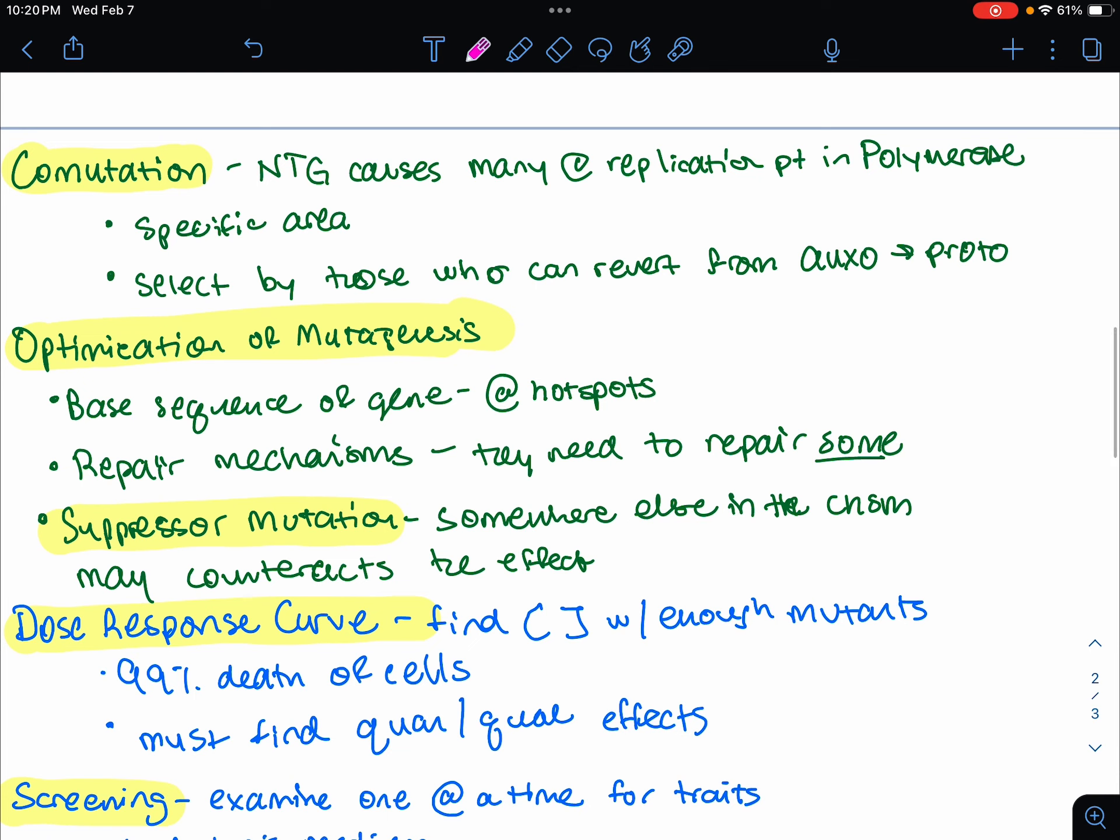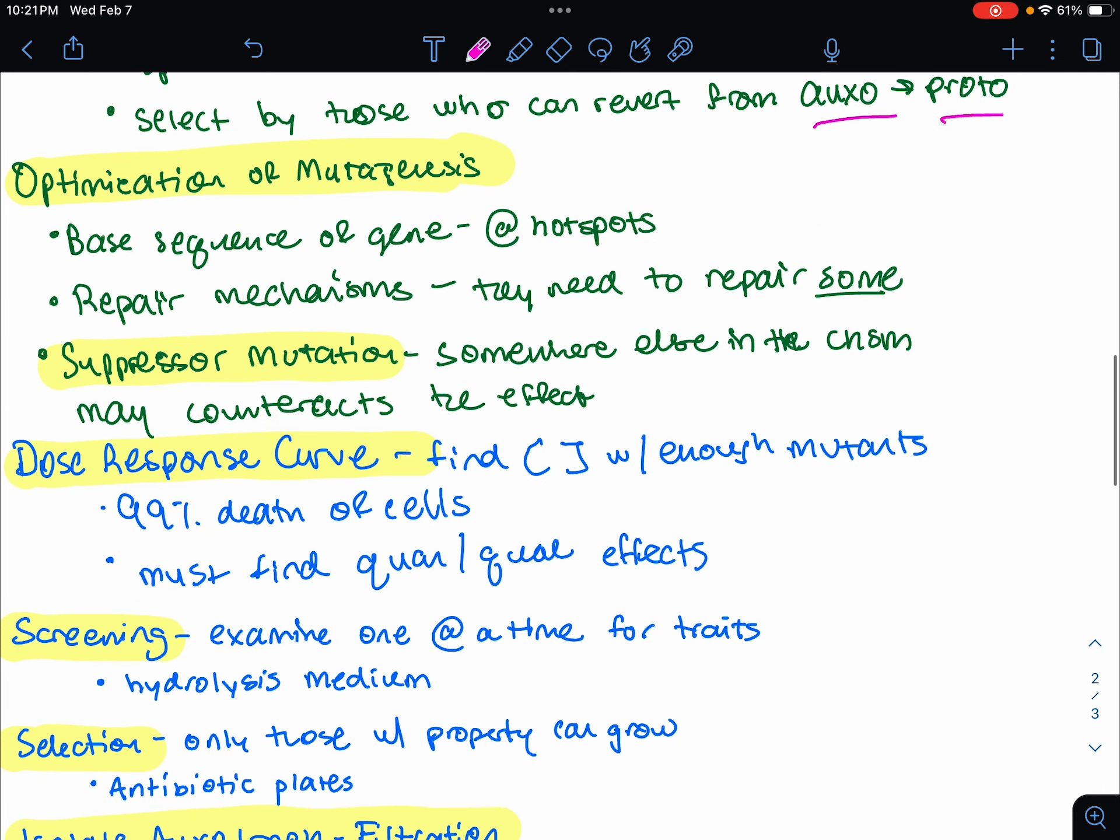We also have something called commutation. We're going to be using this molecule here, NTG. It causes multiple mutations at the replication point through affecting polymerase. When a mutation is induced at a specific area or locus, a large number of further mutations can be found in the closely linked gene. It's kind of like a ripple effect. You could select the mutants through reversion of an auxotrophic mutant, where the mutations are close to selective marker. You're going to select by the organisms who could revert from auxo to prototroph.